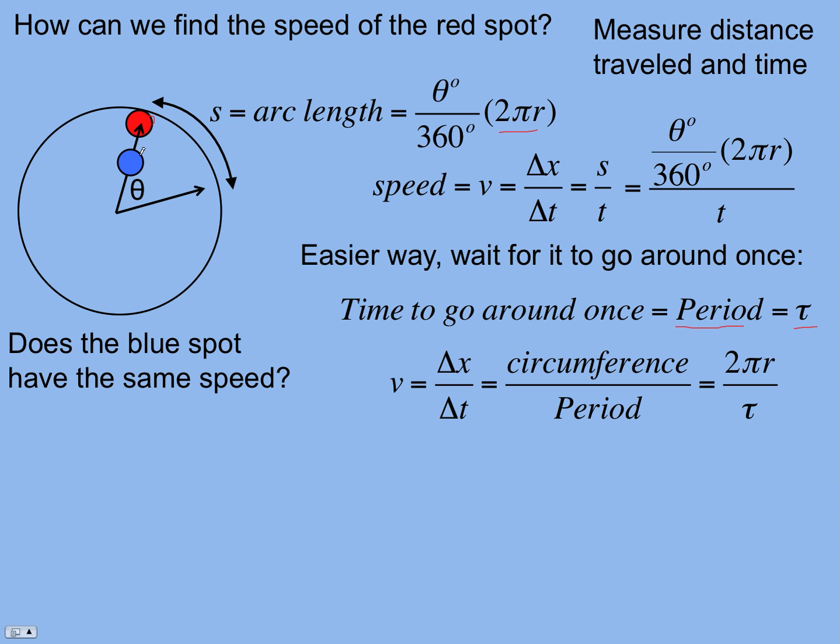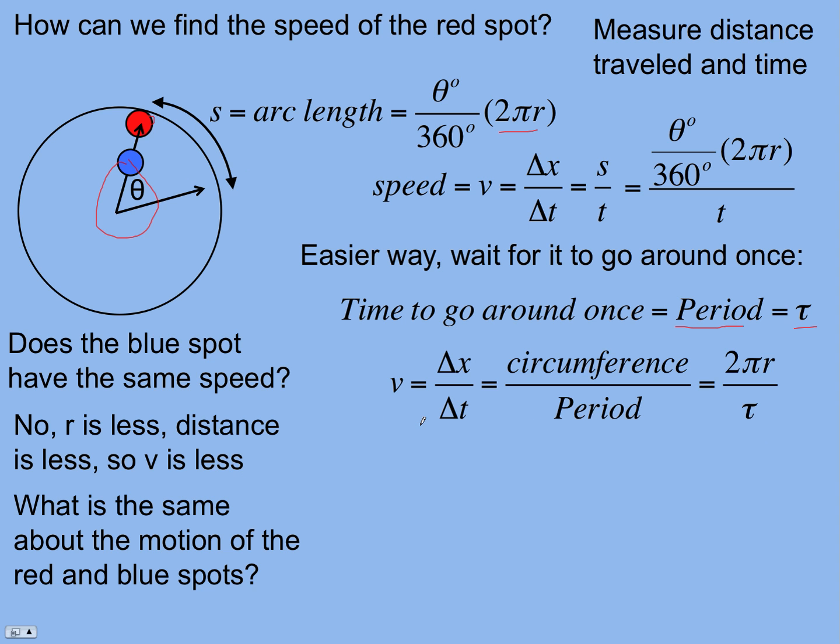How about if we had another spot on here that was also moving? Would it have the same speed? It's going to go around in a circle like that. It's not, because the radius is less, and so the distance it's going is less in the same amount of time. The period would be the same, right?